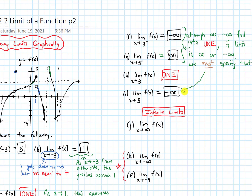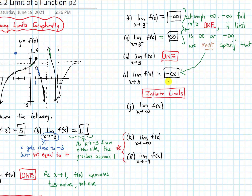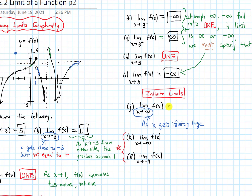I'm going to end this video by previewing infinite limits, which we'll see again in section 2.6. Part J asks: what's the limit as x approaches infinity of our function? When x approaches infinity, x is getting infinitely large. Looking at that part of the graph, the function is approaching a horizontal asymptote and the outputs are getting super close to 3. So that limit is 3.